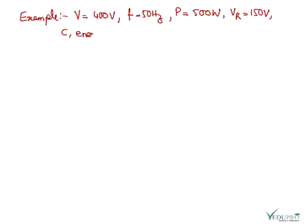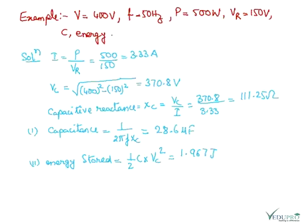So I is given by power upon voltage. Now VC is the root over V square minus VR square. It is given by this.